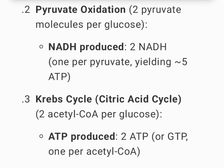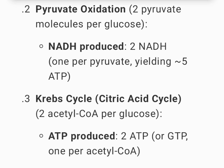2. Pyruvate oxidation. 2 pyruvate molecules per glucose. NADH produced: 2 NADH, 1 per pyruvate, yielding 5 ATP.